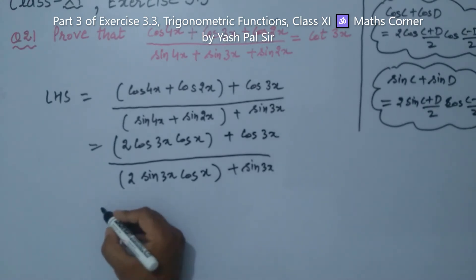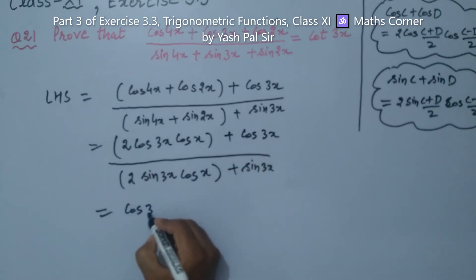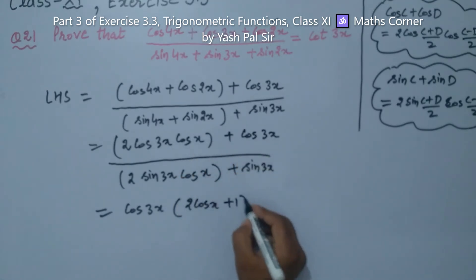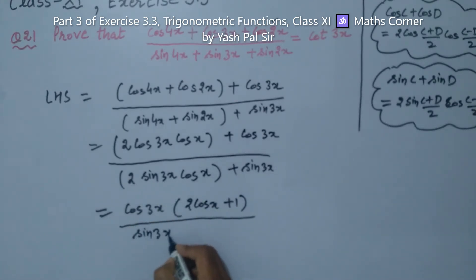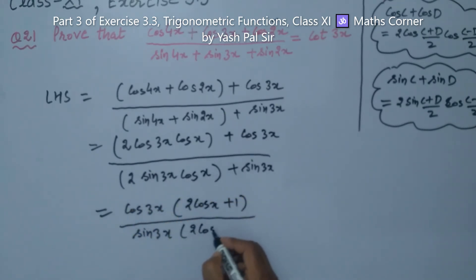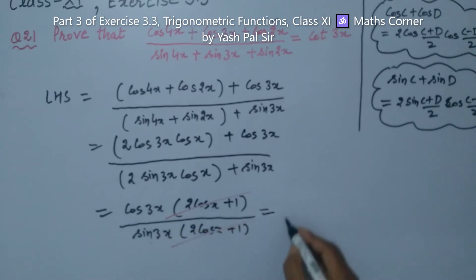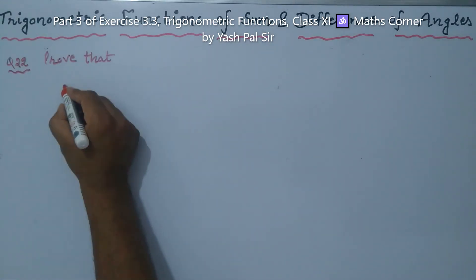Taking cos 3x common in the numerator gives cos 3x (2 cos x + 1). Taking sin 3x common in the denominator gives sin 3x (2 cos x + 1). The bracket (2 cos x + 1) cancels from numerator and denominator, leaving cos 3x upon sin 3x, which equals cotangent of 3x — the right hand side. Hence proved.